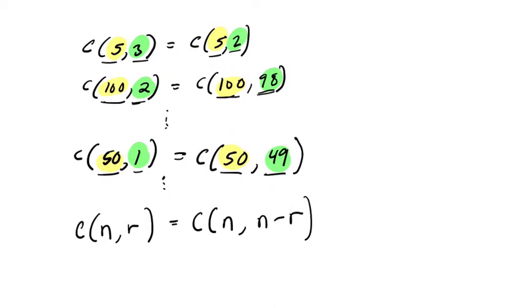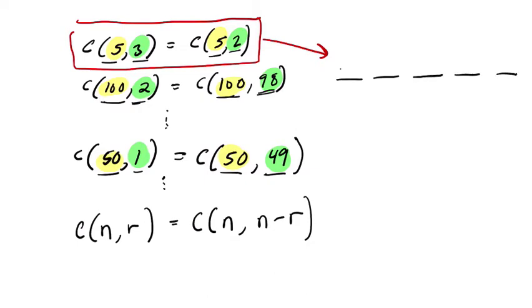Now before we prove this, let's use the smallest example in our set, our pattern here, to prove why this makes perfect sense. So over here, we have 5 objects. Let's use letters. 5 things we're picking from A, B, C, D, and E.